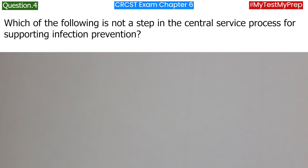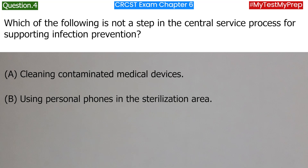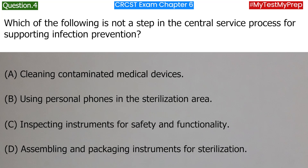Which of the following is not a step in the Central Service process for supporting infection prevention? Answer: B. Using personal phones in the sterilization area. C. Inspecting instruments for safety and functionality. D. Assembling and packaging instruments for sterilization. Answer: B. Using personal phones in the sterilization area.